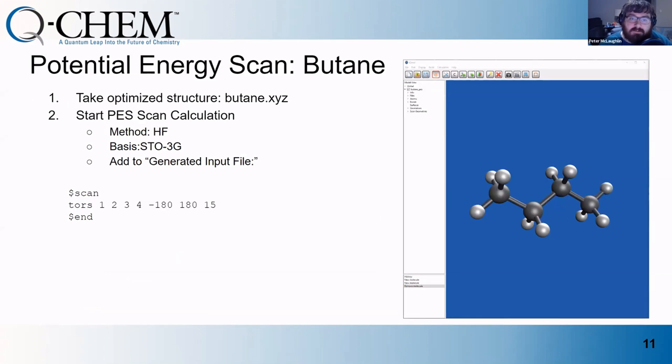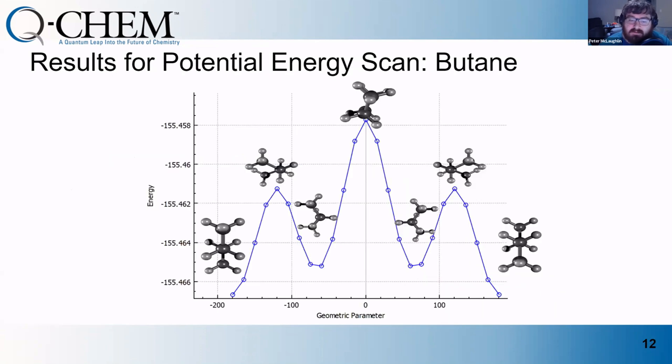Finally, you'll do a potential energy scan of butane. The optimized structure is available on the drive. If you want, you could draw butane and then optimize it yourself and then run the potential energy scan from there. You will do a potential energy scan job type in which you'll scan the torsions for one, two, three, and four. So that's the carbons here. You're going to look at the potential energy surface. If you double-click the scan geometries, which will happen after results, you'll get this picture that hopefully everybody is very familiar with, in which these are the different rotations of the methyl groups around the center bond. You can see the potential energy surface here of the molecule as you go from anti to eclipsed to gauche. You can see all these different energies and the potential energy surface of this molecule.